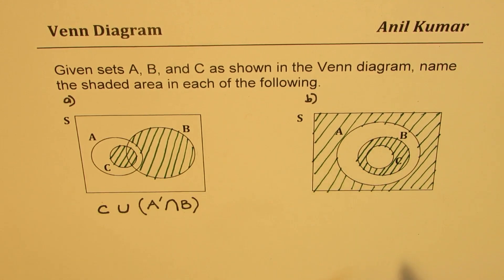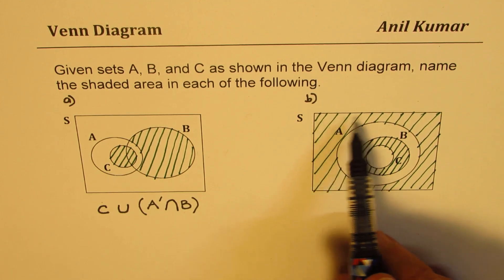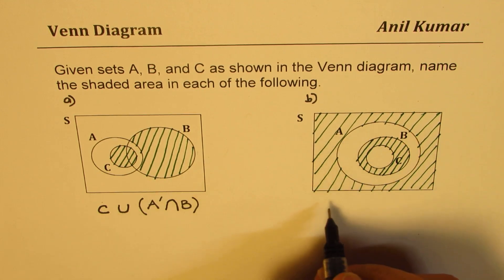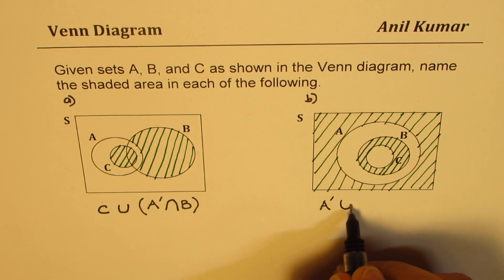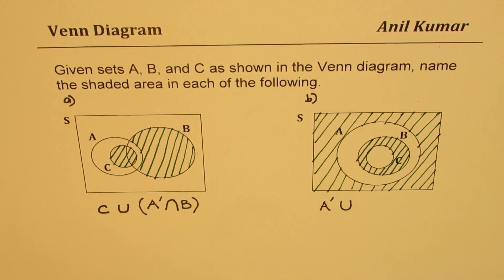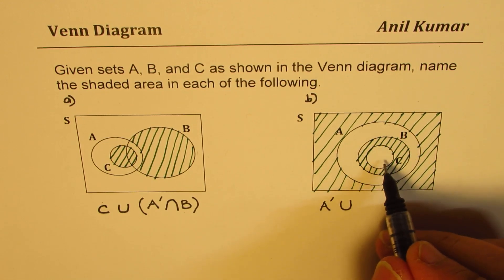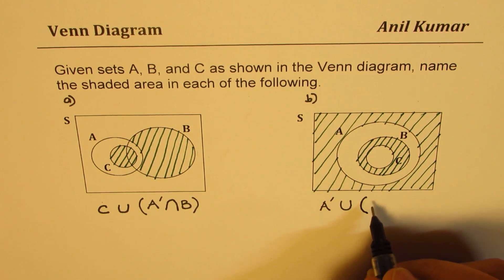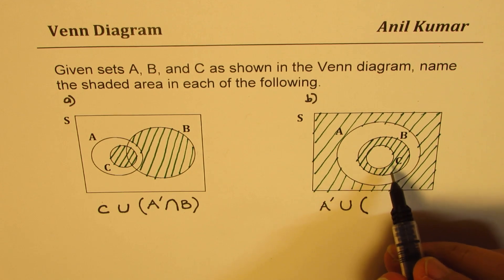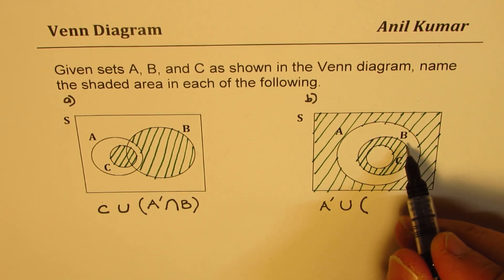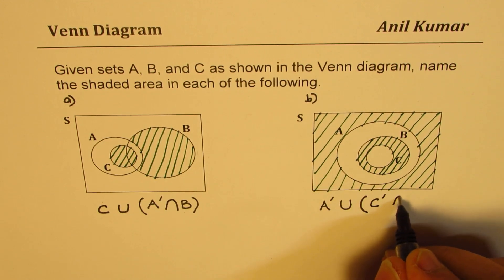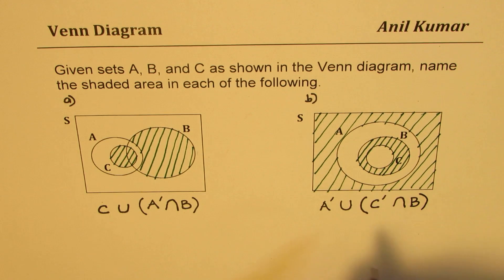Now in diagram B, how will you name it? We have complement of A — everything outside A has been shaded. So it's union of complement A with something inside A that is shaded. Inside does not include C, but includes everything in B, not C. So it is basically intersection of not C and B. That is how you could name it.